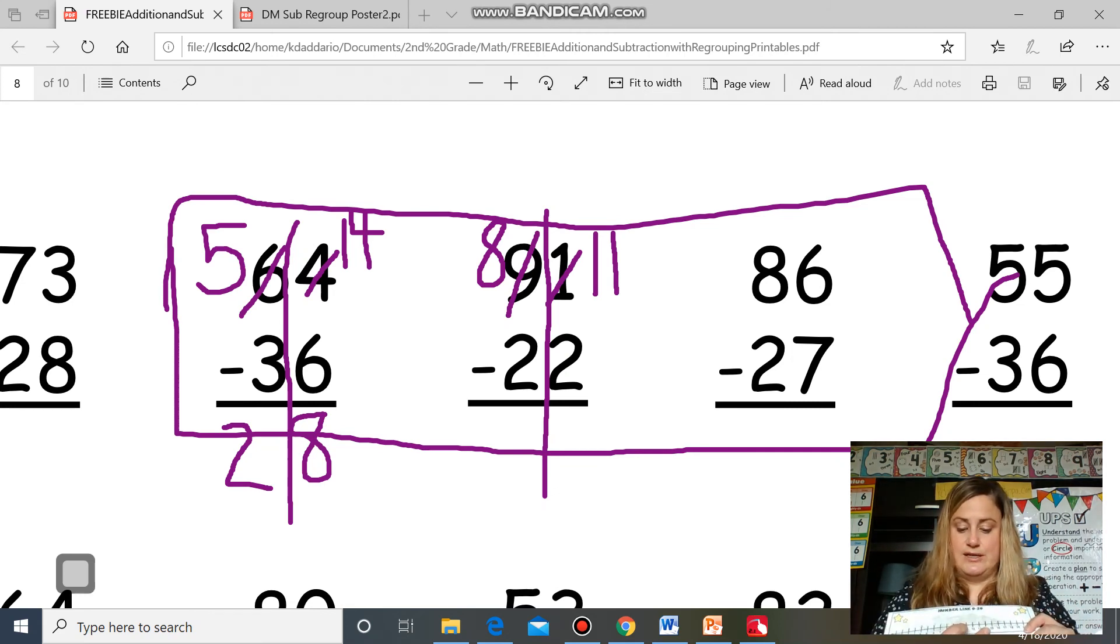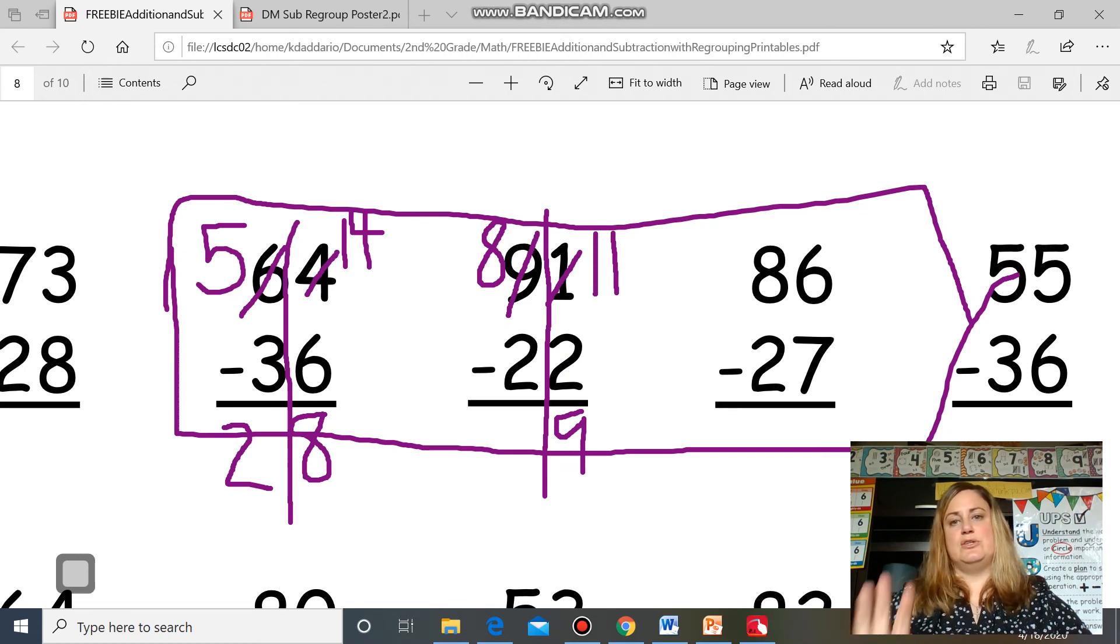So I start at 11, jump back two. One, two. Nine is my answer. And then I go to my tens place and I subtract eight, take away two. So if I have eight fingers, take two away. I have six left. So my answer is 69.